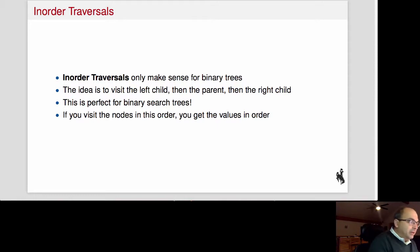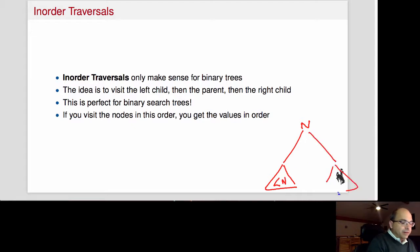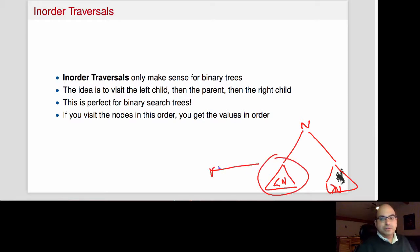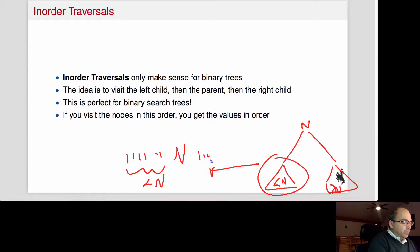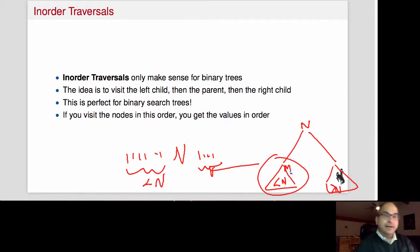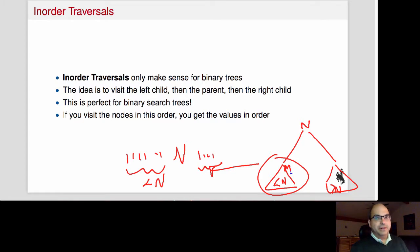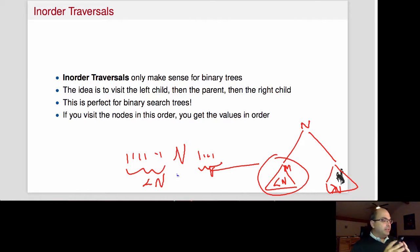In-order traversal works especially well with a binary search tree. In a BST, the left subtree contains all nodes smaller than the current node and the right subtree contains all nodes bigger. So in an in-order traversal, we first print everything smaller than n (the left subtree), then we print n, then we print everything bigger than n. The left subtree itself has the same structure recursively, so because of the way we're printing, it actually prints out in sorted order.